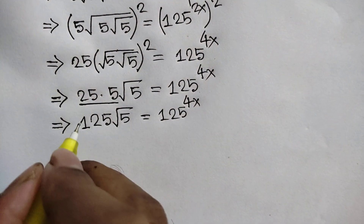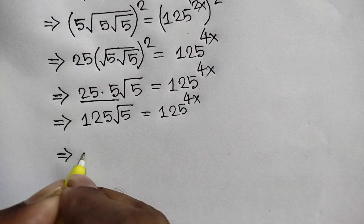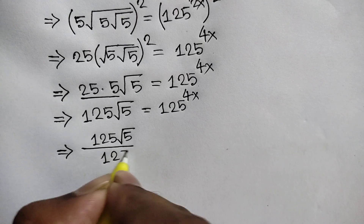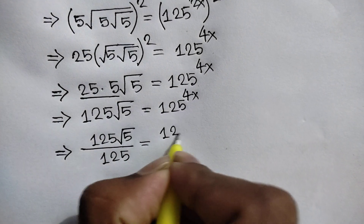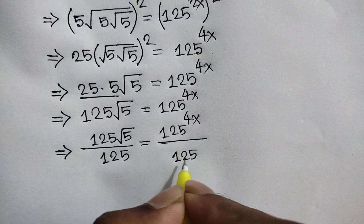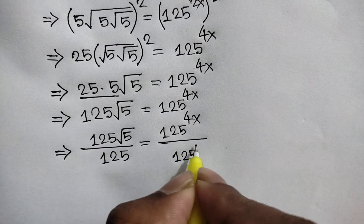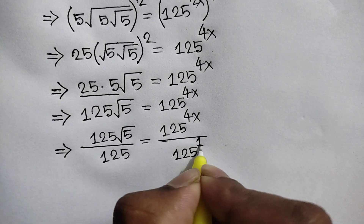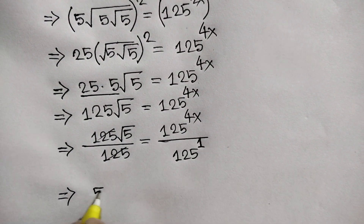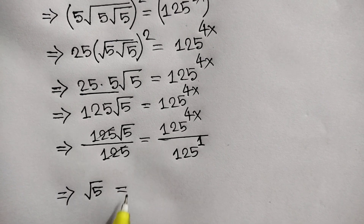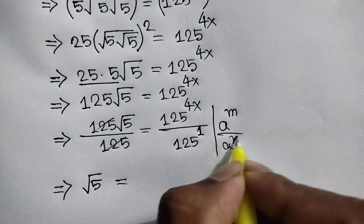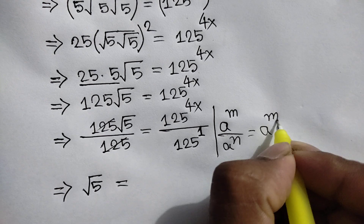Now dividing both sides by 125, we will write: 125 times square root of 5 over 125 is equal to 125 to the power 4x over 125. Here 125 is the same as 125 to the power 1, and canceling, it will be remaining: square root of 5 is equal to. Here we can apply this rule: a to the power m over a to the power n is equal to a to the power m minus n.